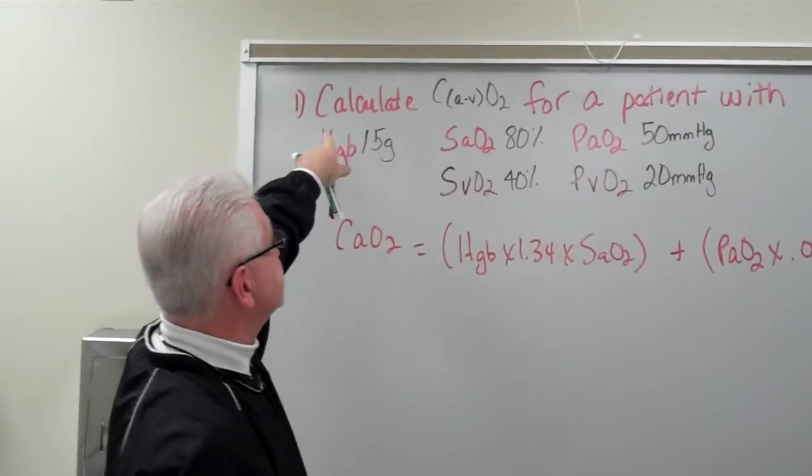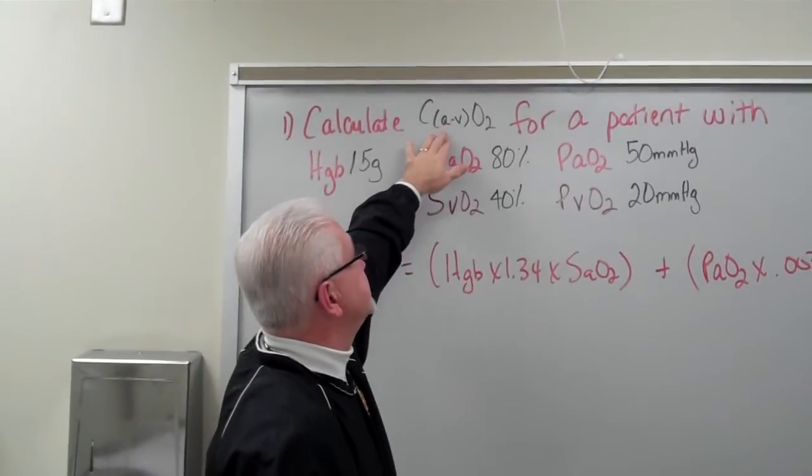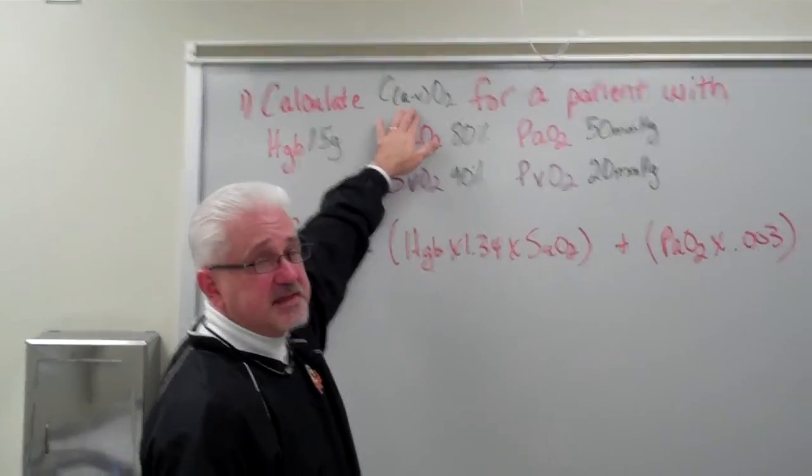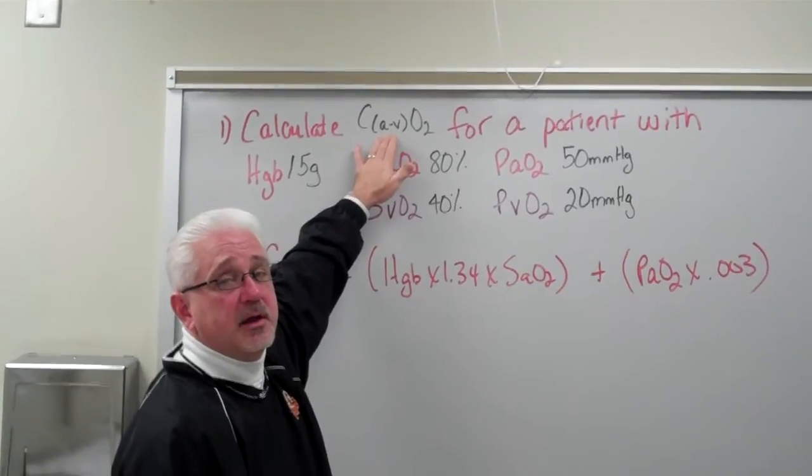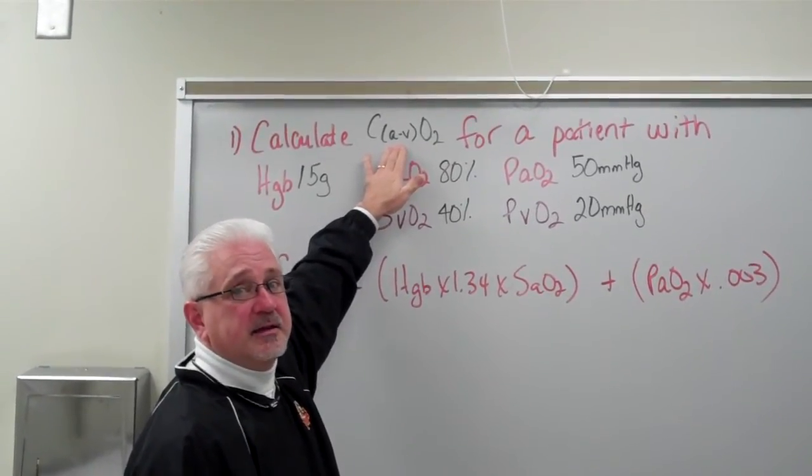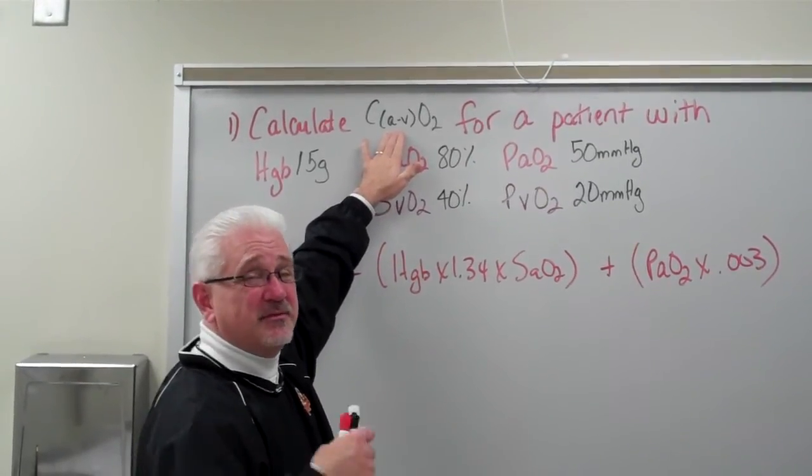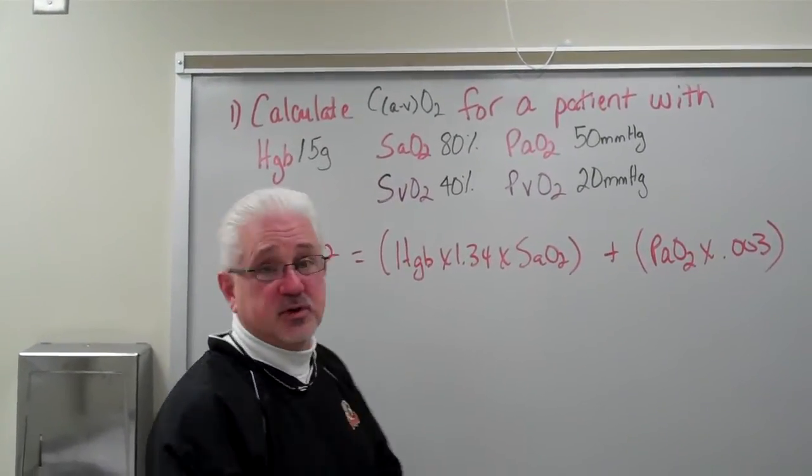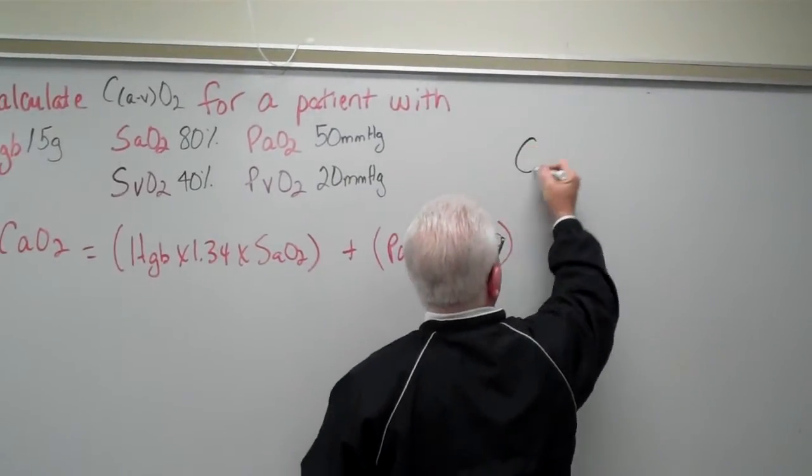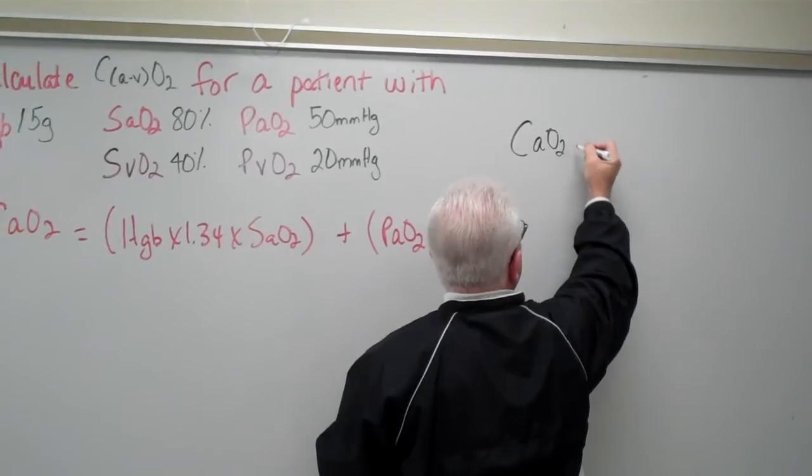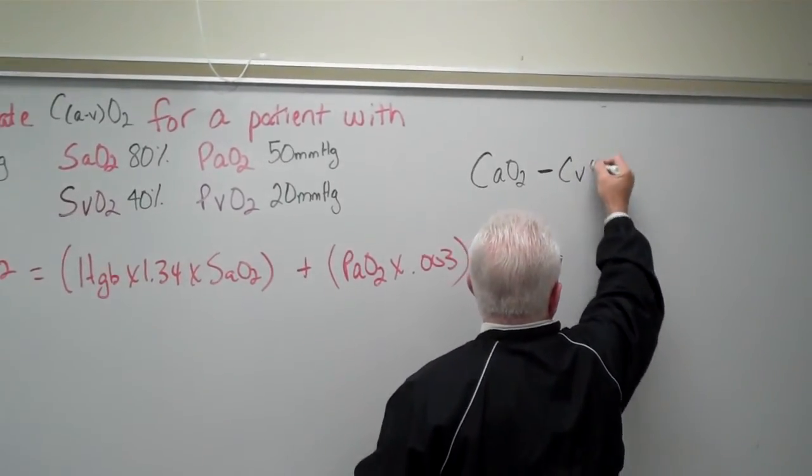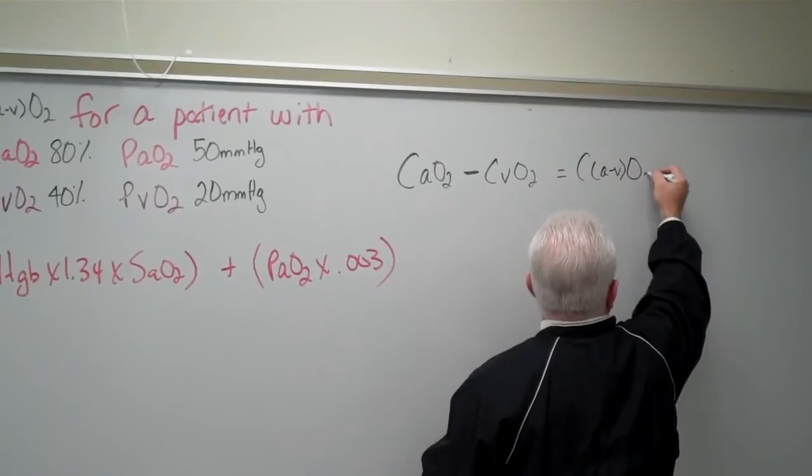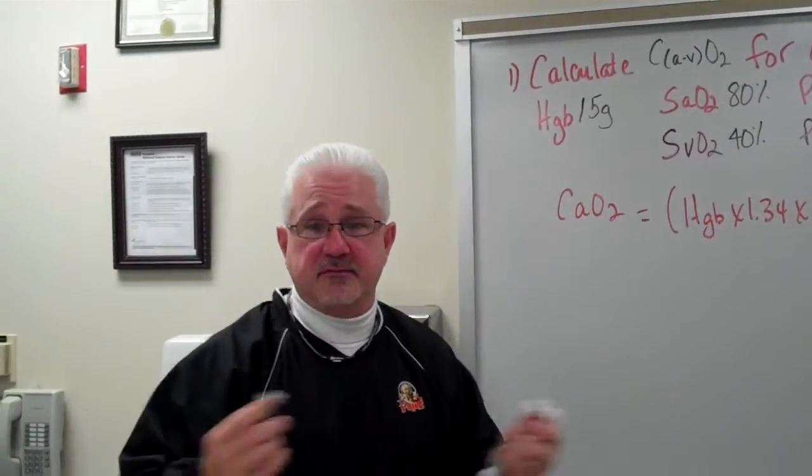But our equation up here is asking us, our problem, for us to calculate what is the Ca minus vO2 for a patient with the following values. So what this up here is saying is, it wants me to compare the total O2 content in the arterial blood to what is left in the venous blood, which is now the total O2 content in the venous blood. So I take the CaO2, and I subtract the CvO2. Normal is going to be about 4 to 5 vols percent.